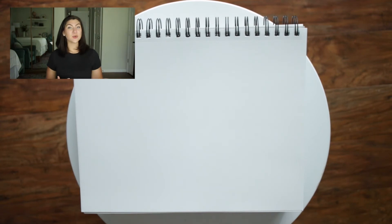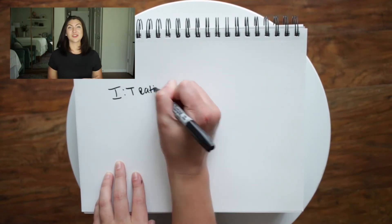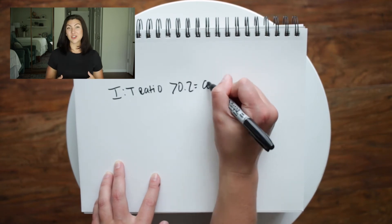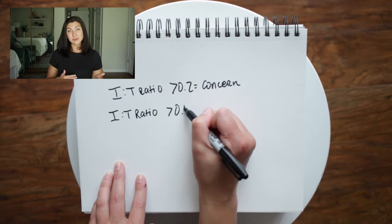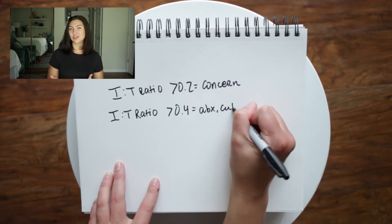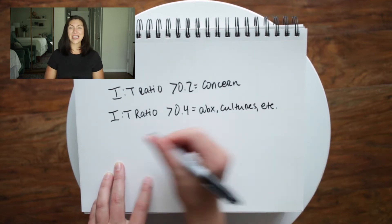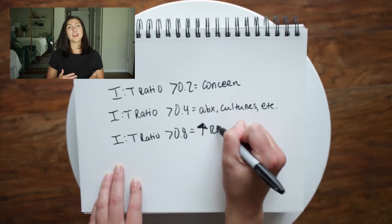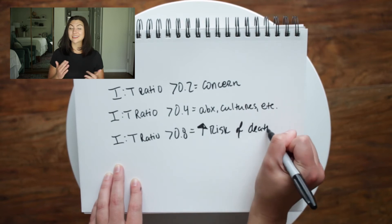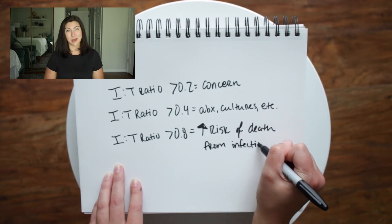Before we look at some sample CBCs with differentials, let's talk about what each of these ratios means. A ratio of 0.2 and greater is concerning and should raise your suspicion for infection. A ratio of 0.4 and greater likely indicates that you may need to start antibiotics on your patient and get blood cultures. And a ratio of 0.8 and greater is very concerning and correlates with a much higher likelihood that your patient will die as a result of sepsis.